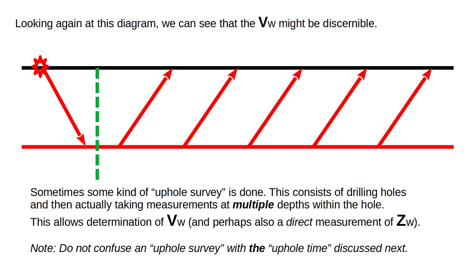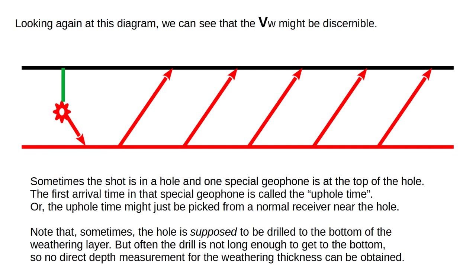Do not confuse an up-hole survey with the up-hole time discussed next. Sometimes the shot is in a hole and one special geophone is at the top of the hole — the first arrival in that special geophone is called the up-hole time. Or, the up-hole time might just be picked from a normal receiver near the hole. Note that sometimes the hole is supposed to be drilled to the bottom of the weathering layer, but often the drill is not long enough, so no direct depth measurement of the weathering thickness can be obtained.